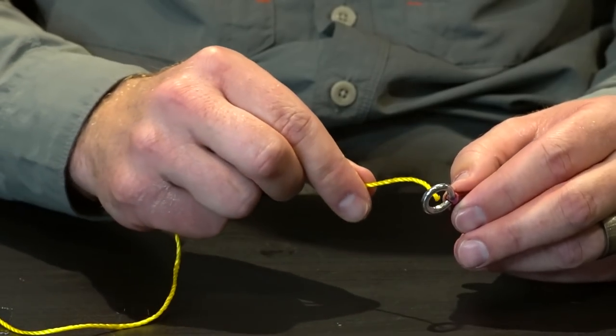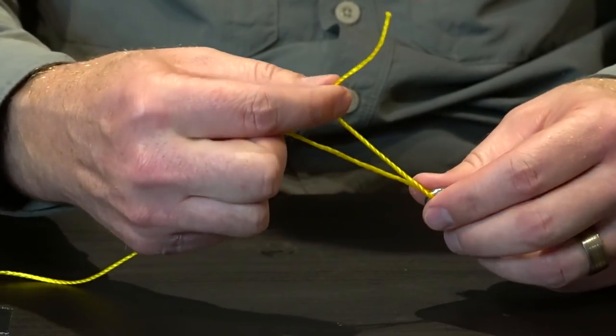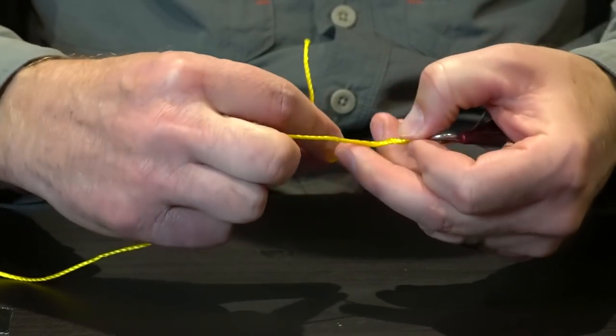To do the clinch you go through the eye of the hook and you twist the tag end around the main line.